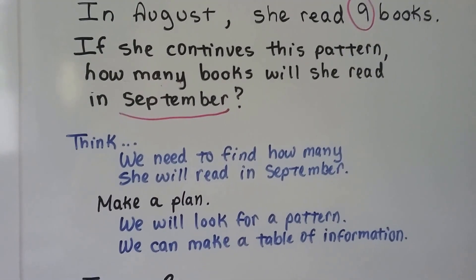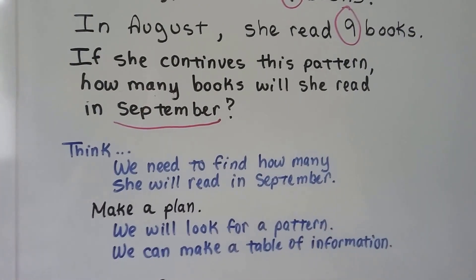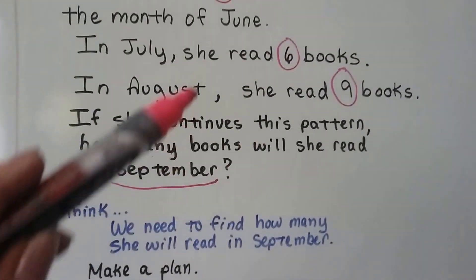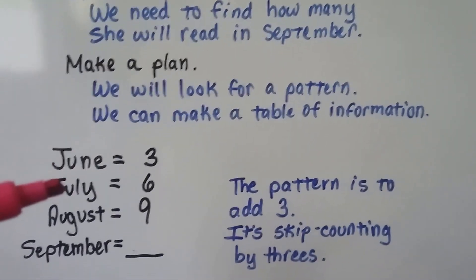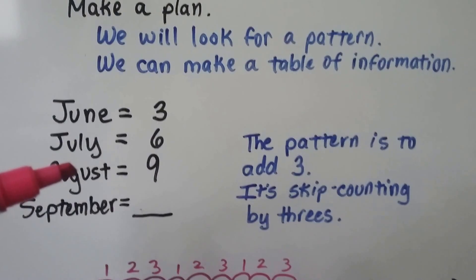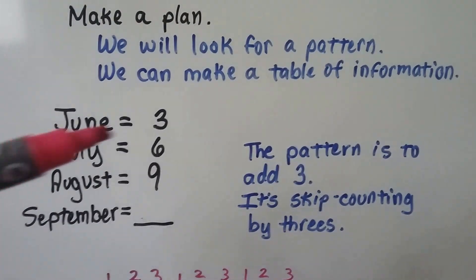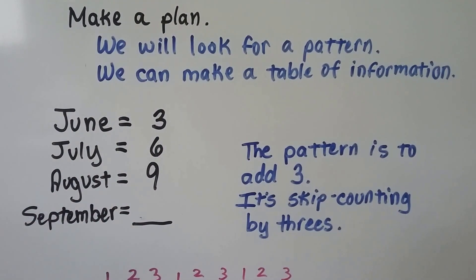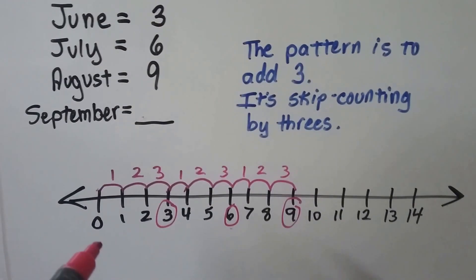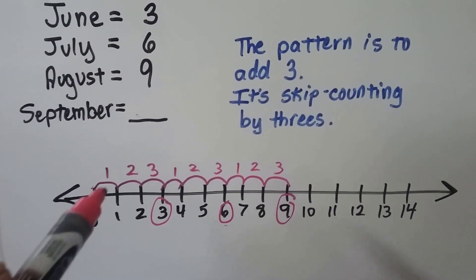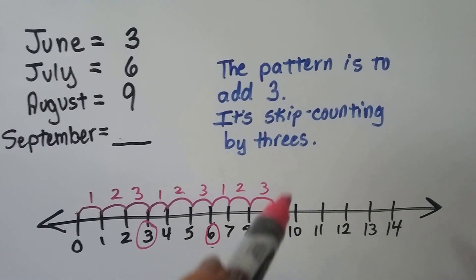We need to make a plan so we can look for a pattern, and we can even make a table of information. We have 3, 6, and 9. June was 3, July was 6, August was 9. So what is September? This pattern is to add 3 — it's skip counting by 3s. 3, 6, 9. If we look at it on a number line, it's going 3, 6, 9.